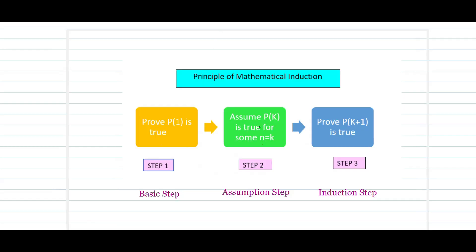To recap the principle of mathematical induction: step 1 is proving that p of 1 is going to be true — that is, we replace n as 1 in the statement p of n and prove it is true. In step 2, we assume that p of k is true for some integer n equal to k. In step 3, the induction step, we prove that p of k plus 1 is true. These three steps lead us to the conclusion that p of n is true for all n greater than or equal to 1, belonging to the set of natural numbers.